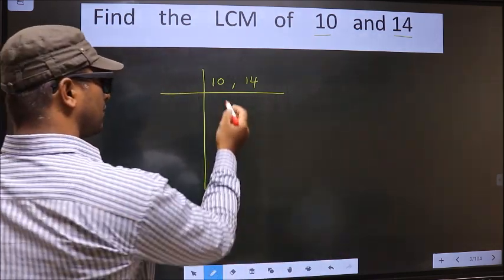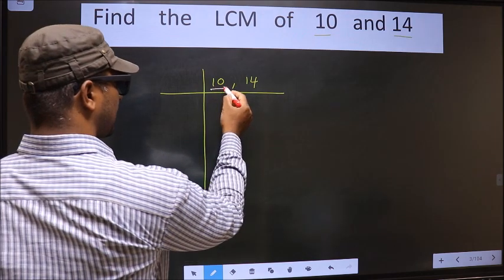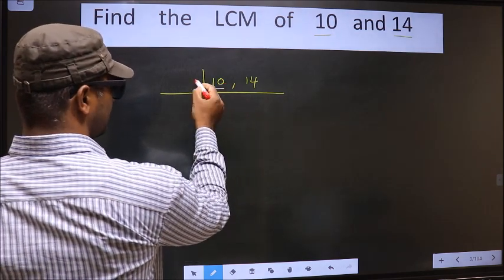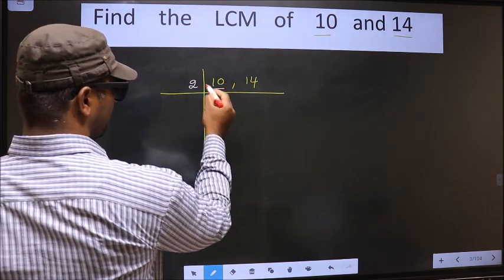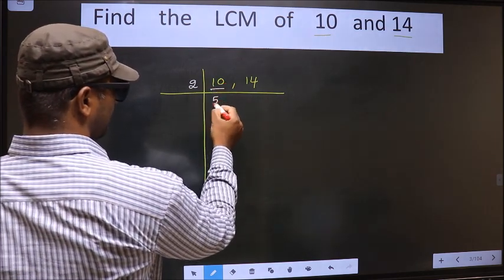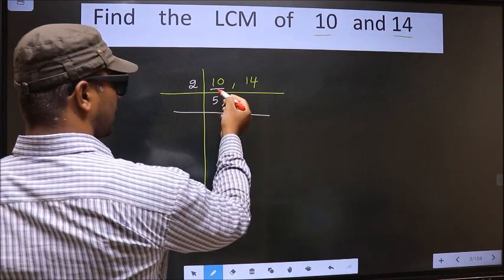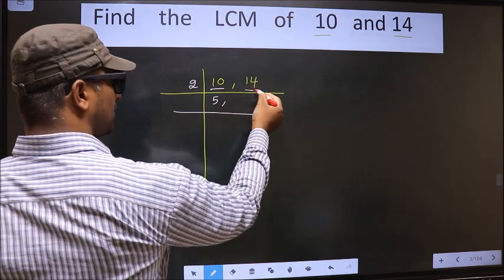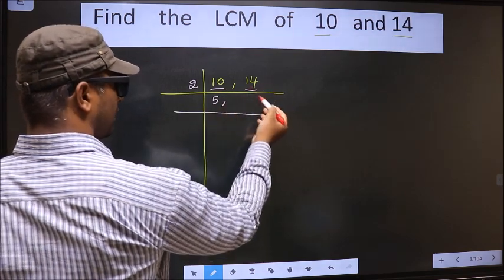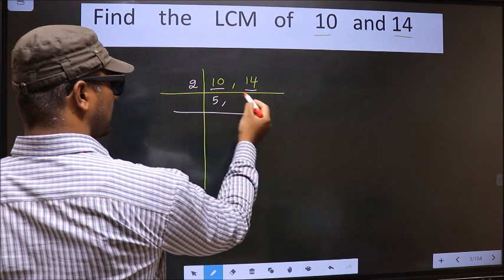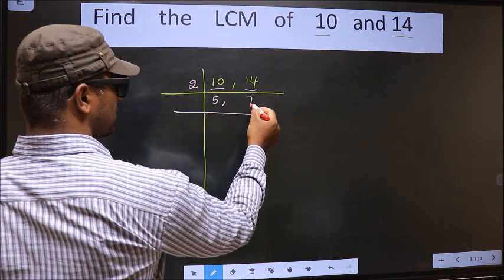Now we should focus on the first number, that is 10. 10 is nothing but 2 5s — 10. Now the other number 14. When do we get 14 in the 2 table? 2 7s 14.